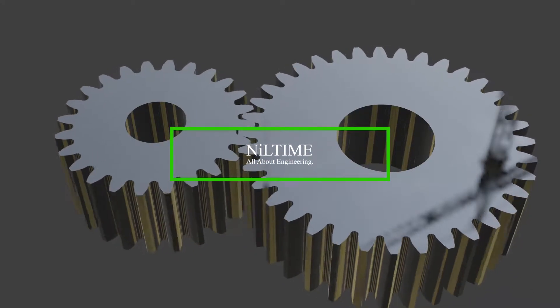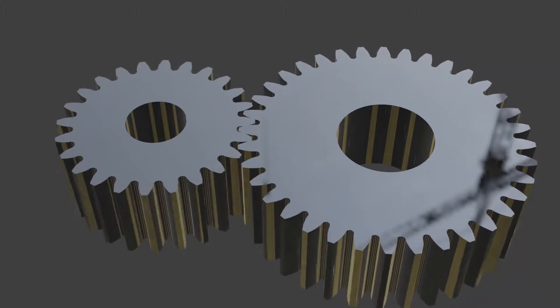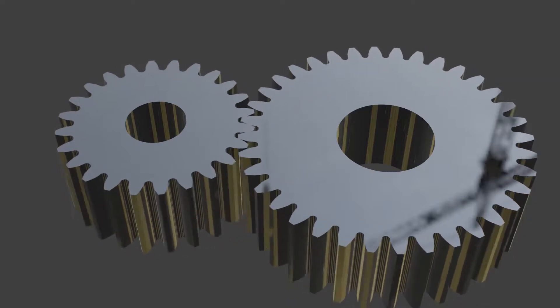For two gears in mesh, the smaller gear is called the pinion and the larger is called, simply, the gear.